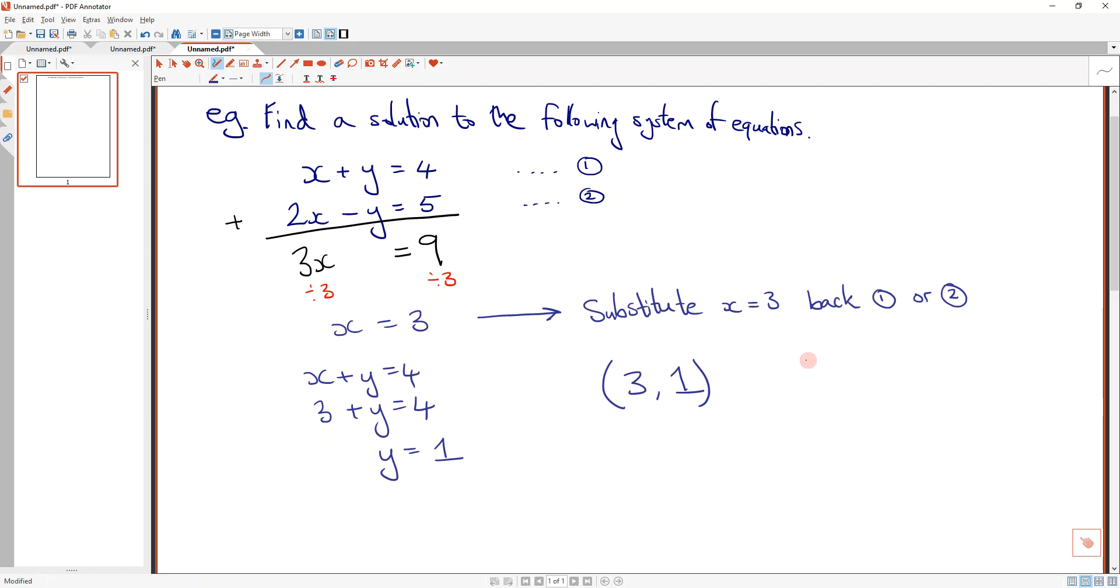So let's imagine, do not write this bit down. Let's imagine the equations are like this. x plus y equals 4. 2x plus y equals 5. So I've changed it. What could I do in this case? Because if I add them both together, the x's and the y's, nothing's going to eliminate. Nothing's going to disappear. So what could you do, Denham?